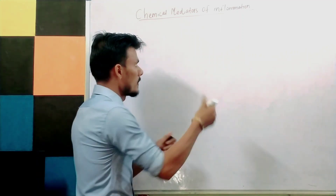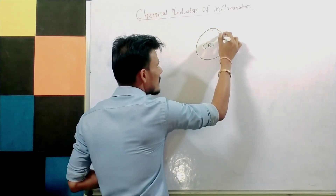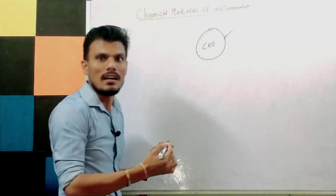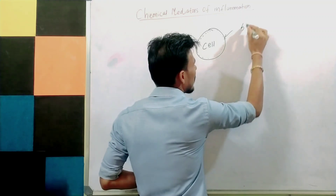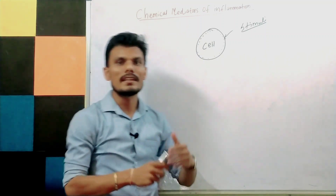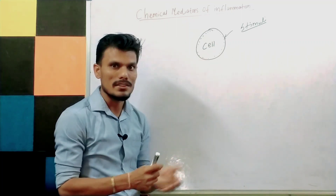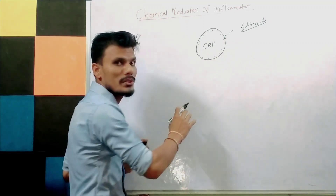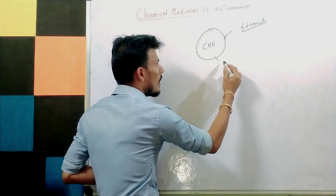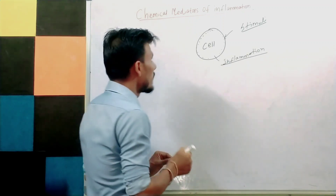So we'll see what chemical mediators are. Suppose this is the cell. Inside the cells there are some chemicals, and these chemicals are released when the cells are attacked by some kind of foreign microorganism, foreign particle, or stimuli. This stimuli can be the injurious agent or any etiological agent causing damage to our cell, resulting in cell injury. So when the cell is attacked by some type of stimuli, these chemicals are released, mediating the process of inflammation — that is why it is called chemical mediators of inflammation.